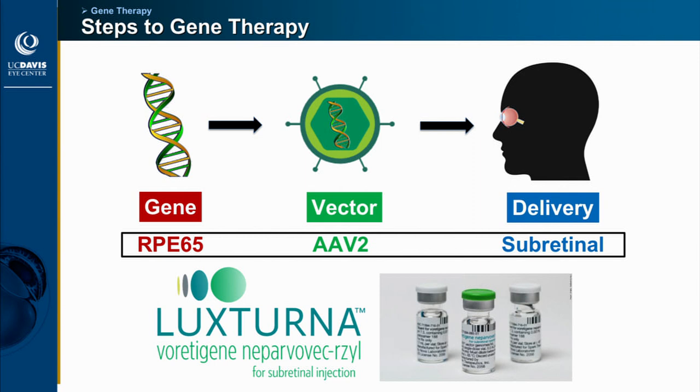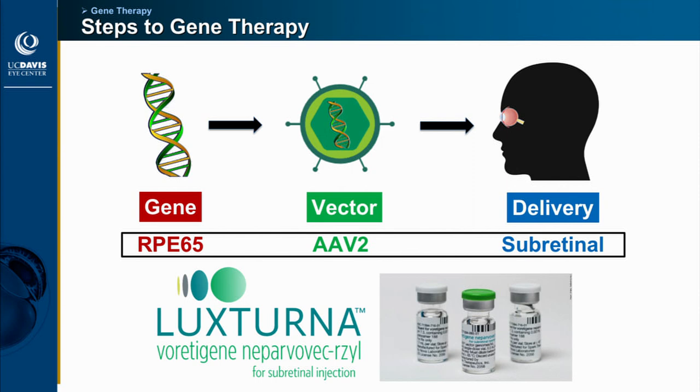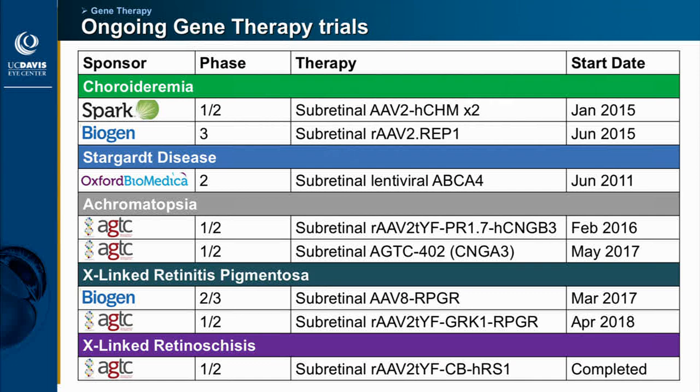This type of research has led to the first FDA-approved gene therapy, Luxturna, as well as a variety of other ongoing gene therapy trials. The majority of these are subretinal, and with the exception of the Stargardt disease trial, which uses lentivirus, most use AAV.